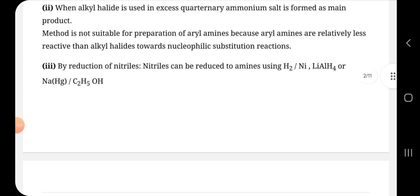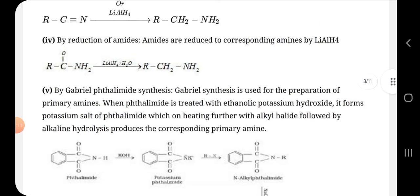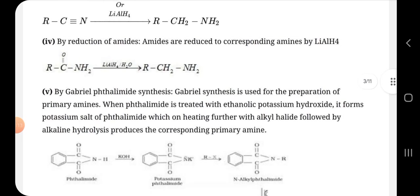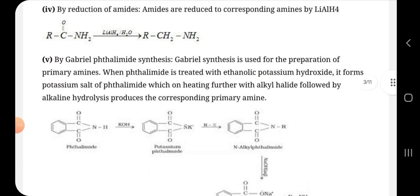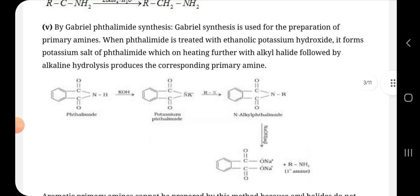Then, the third is by reduction of nitriles. Then we can also use Gabriel phthalimide synthesis. It is used for preparation of primary amines. When phthalimide is treated with ethanolic or alcoholic potassium hydroxide KOH, it forms potassium salt of phthalimide which, on heating further with alkyl halide followed by alkaline hydrolysis, produces the corresponding primary amine.